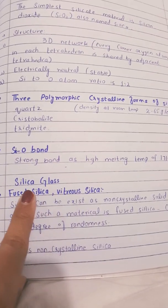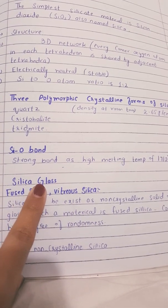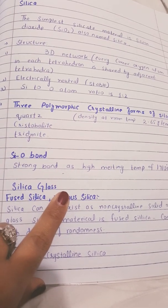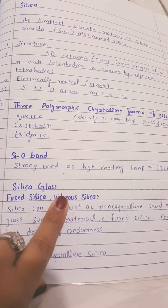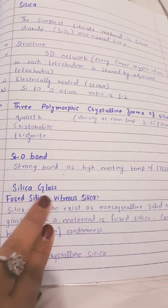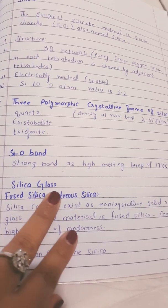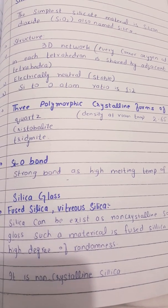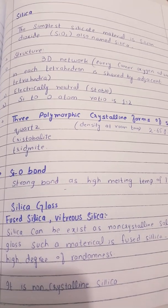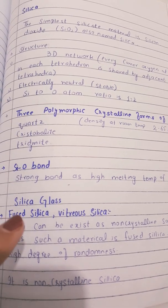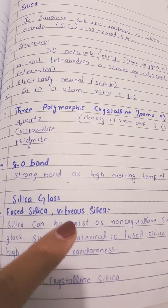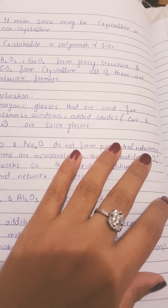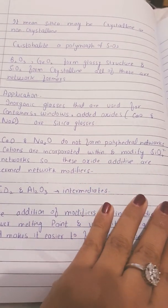Next we will talk about silica glass. Silica glass is made up of silica but in amorphous form, and the randomness of its structure gives us a non-crystalline structure. We can also call this vitreous silica. So silica can exist in both crystalline form and non-crystalline form — in its pure form silica is crystalline, but as fused silica or vitreous silica it forms a non-crystalline structure.